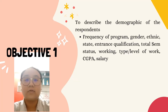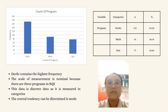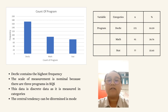Now I will proceed to Objective 1, which is to describe the demographic of the respondent. First is the frequency of the program. From the graph and table, we can see that the program Decision Science contains the highest frequency compared to the others, consisting of 172 out of 340 graduates. The scale of measurement is nominal because there are 3 programs in SQS, and the data is discrete as it is measured in categories. The central tendency that can be found is mode.